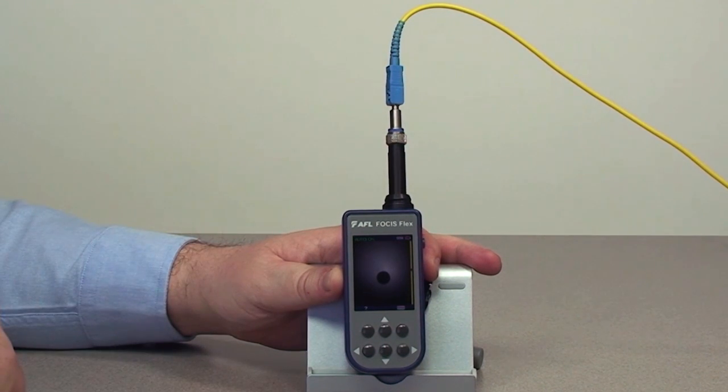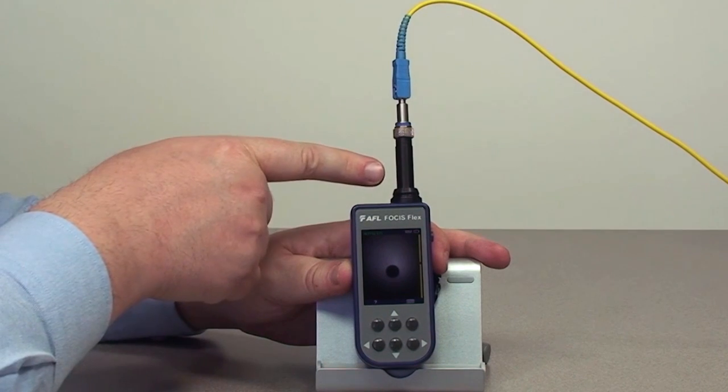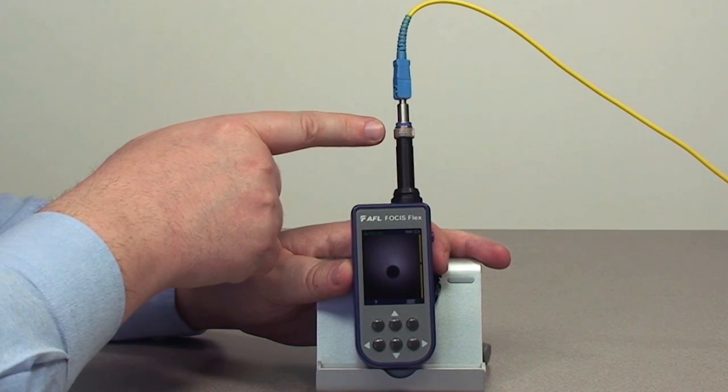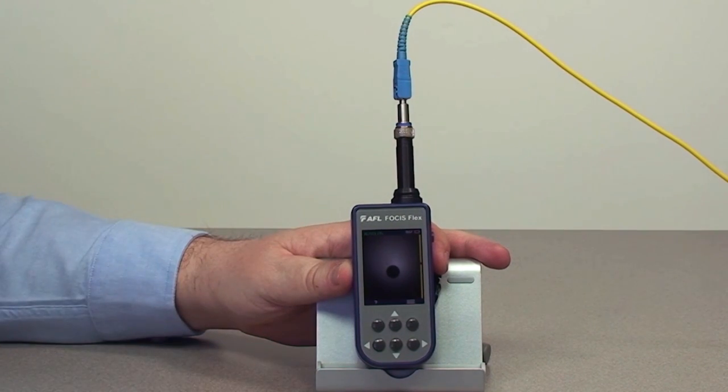As you look at the FocusFlex, you have the inspection barrel where you can put on a number of different tips, allowing you to inspect both patch cord and bulkhead connectors of a number of different types.